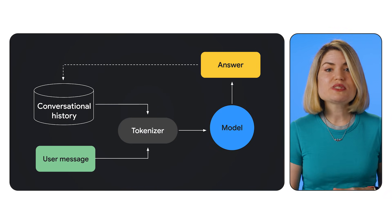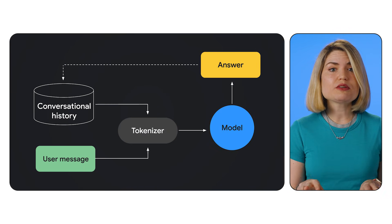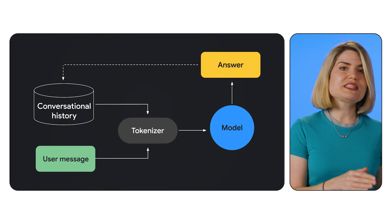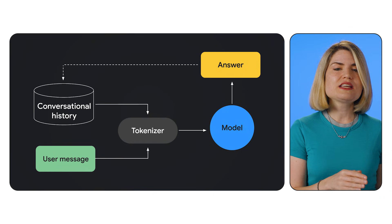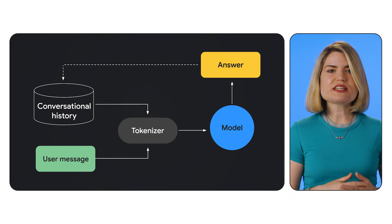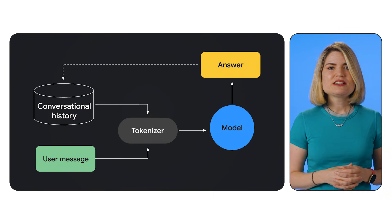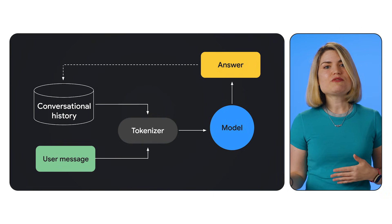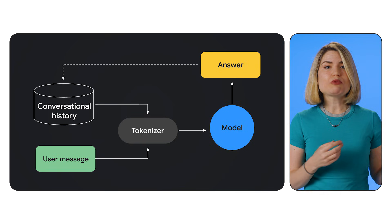When you send a new query that refers to previously seen context, the model doesn't need to reprocess everything. Instead, it can efficiently retrieve the relevant information from the cache.